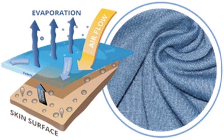Evaporation also helps our body remain comfortable in the summer season. During summer season we sweat a lot (paseena bahut aata hai). In this picture, the skin surface is shown with tiny drops of sweat. When we wear cotton clothes, the sweat is absorbed by the cotton cloth. The cotton cloth becomes wet and the sweat is exposed to air, so it takes heat from the surrounding and from our skin and evaporates.